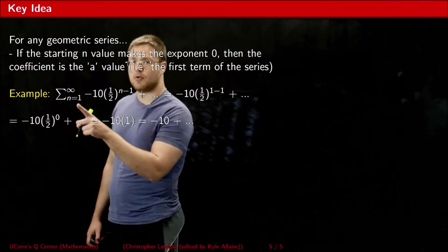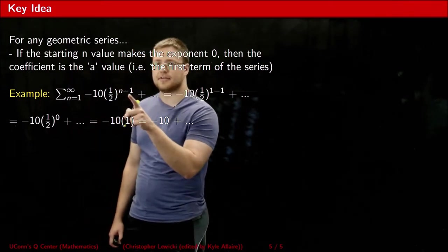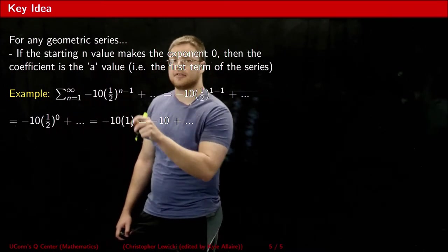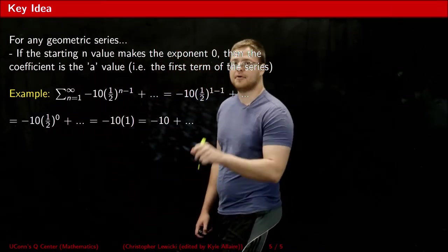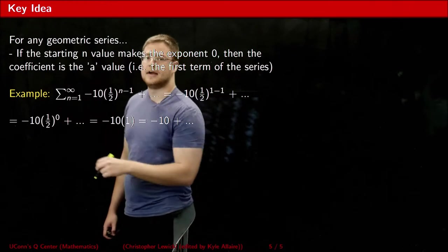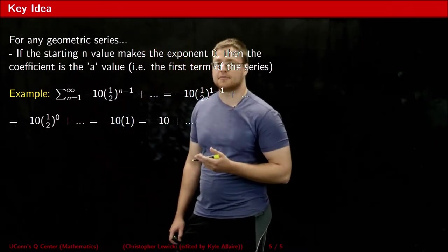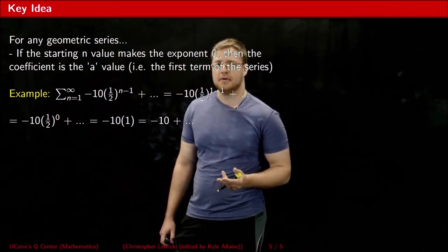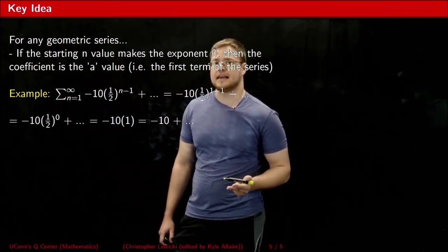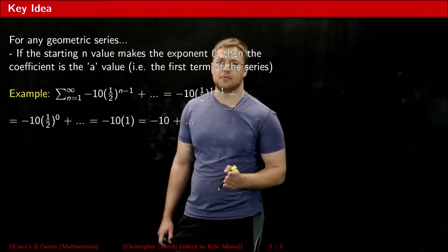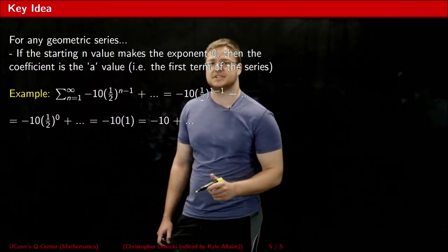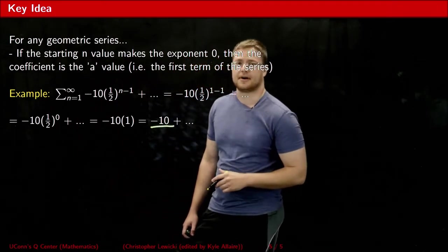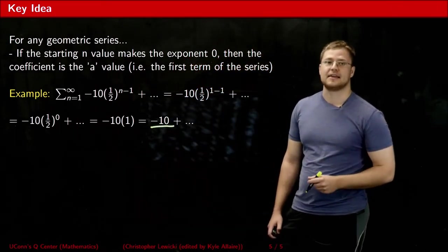Here, the lower limit of the series is 1, and the exponent is n minus 1. If I substitute the starting n value into the exponent, notice that the exponent simplifies to 0. Anything raised to the power of 0 is just 1. So whenever your starting n value makes the exponent 0, basically what ends up happening is you get your coefficient multiplied by 1, but multiplying by 1 doesn't change anything. So that means that the coefficient for the r part is our a value, in this case negative 10.